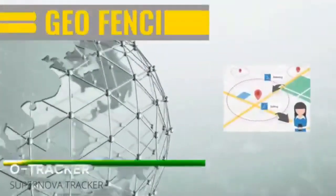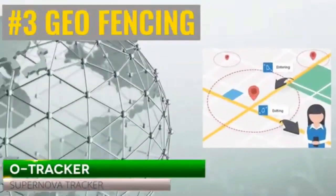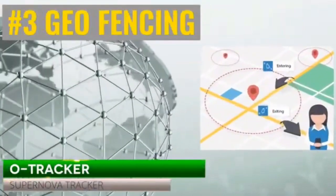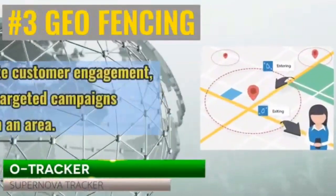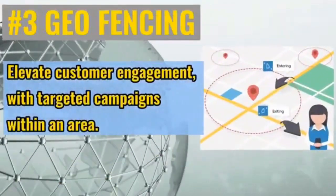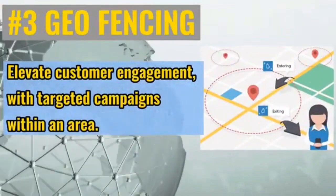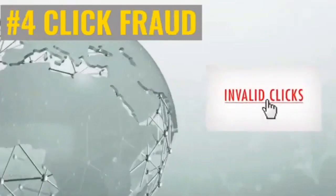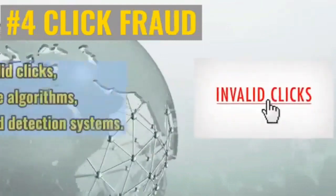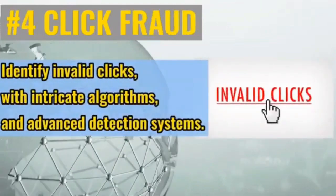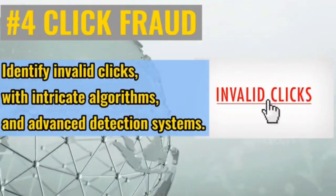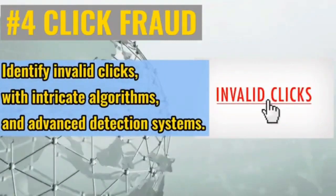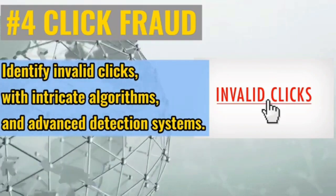Number three: geo fencing — elevate customer engagement with targeted campaigns within an area. Number four: click fraud — identify invalid clicks with intricate algorithms and advanced detection systems.